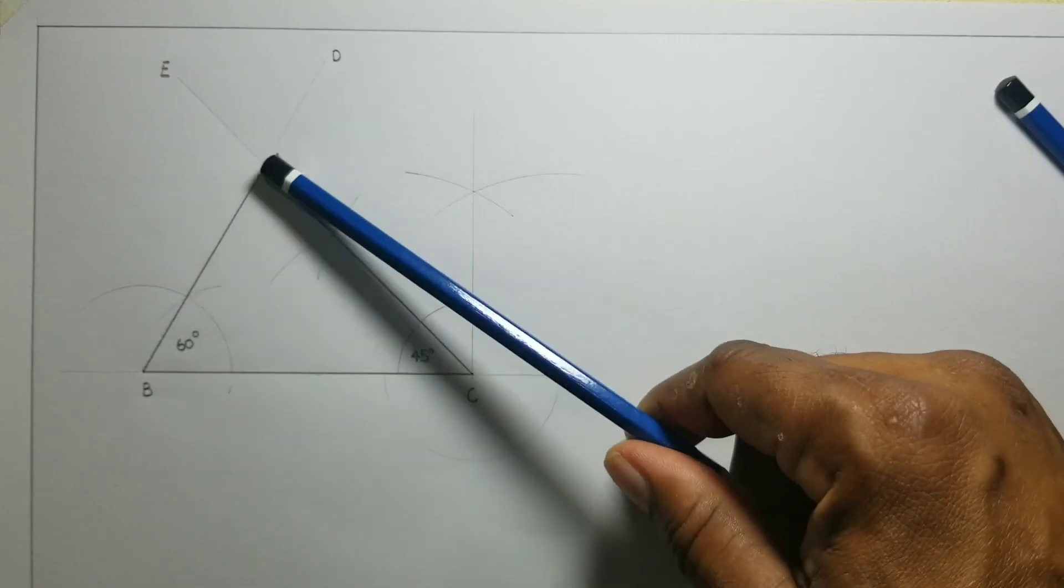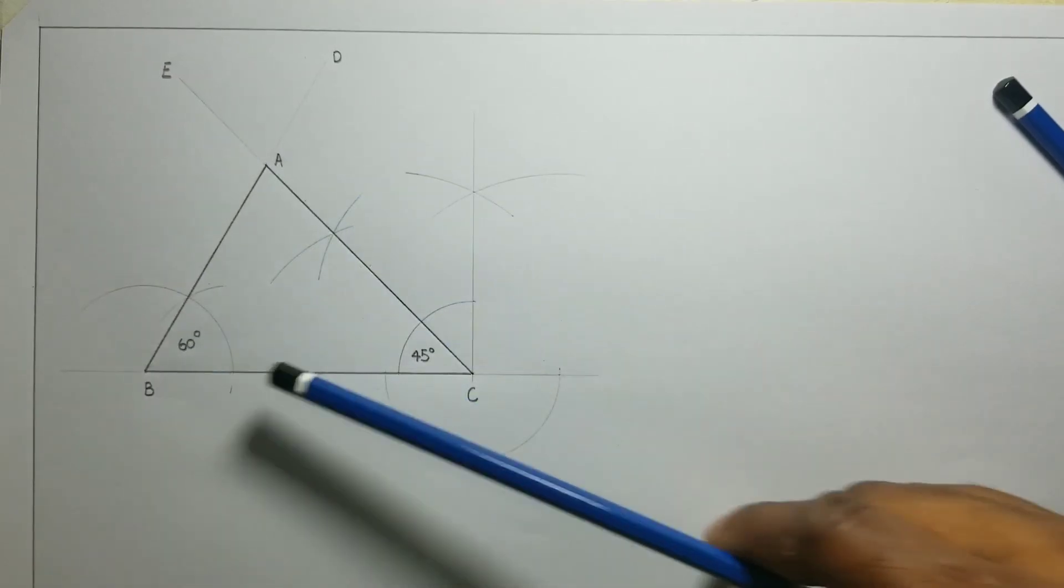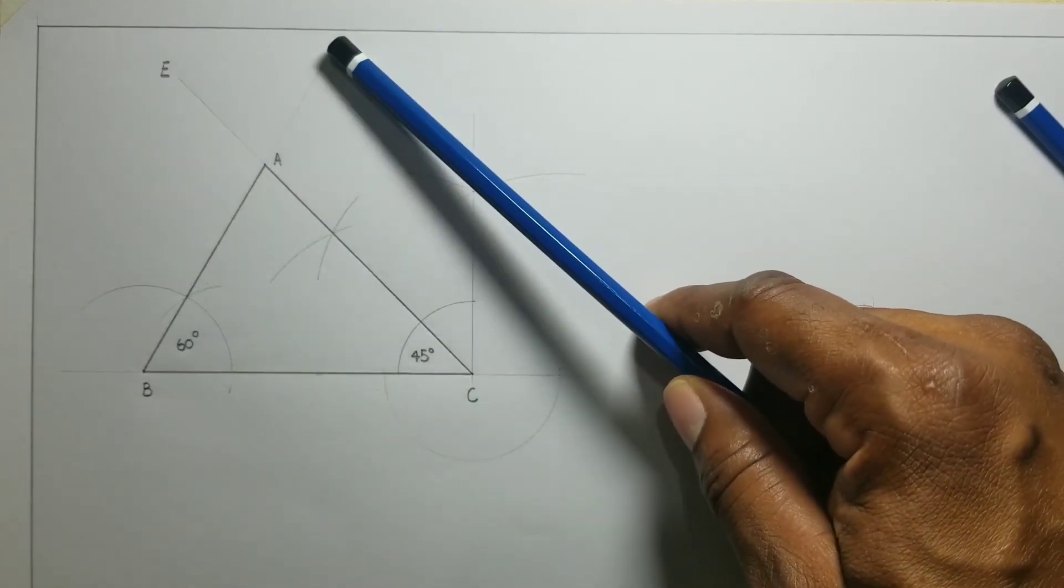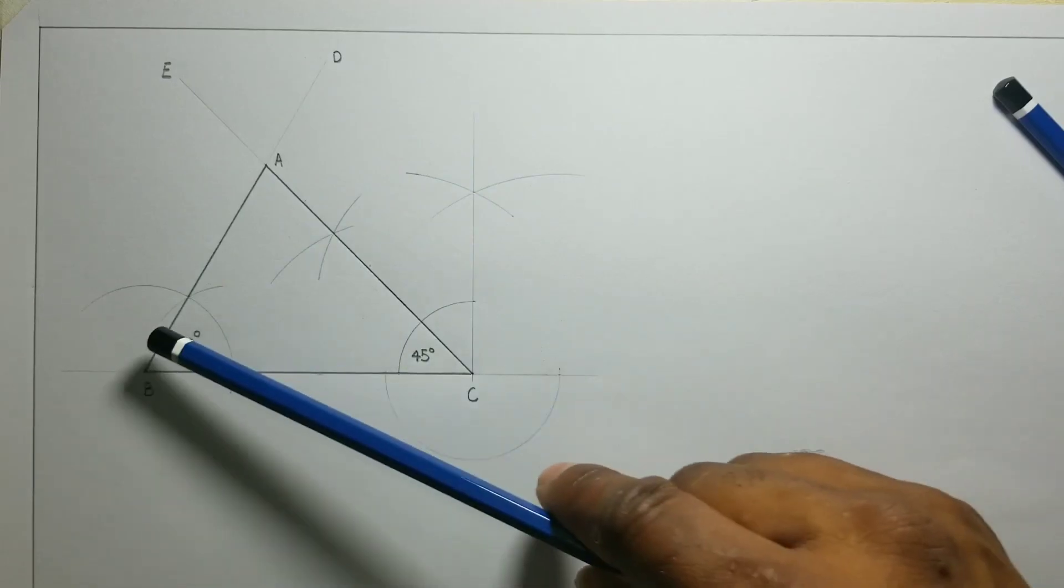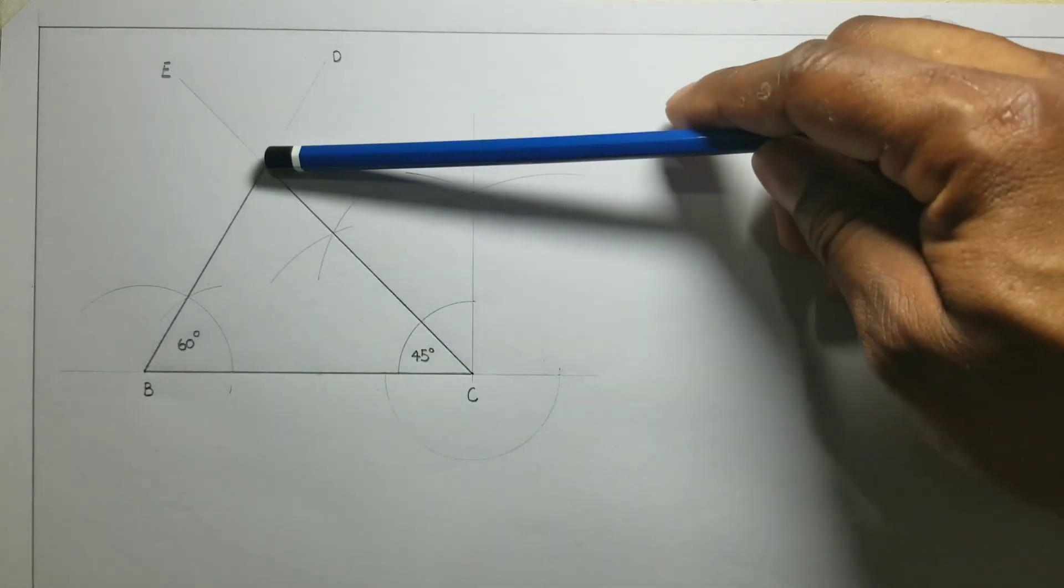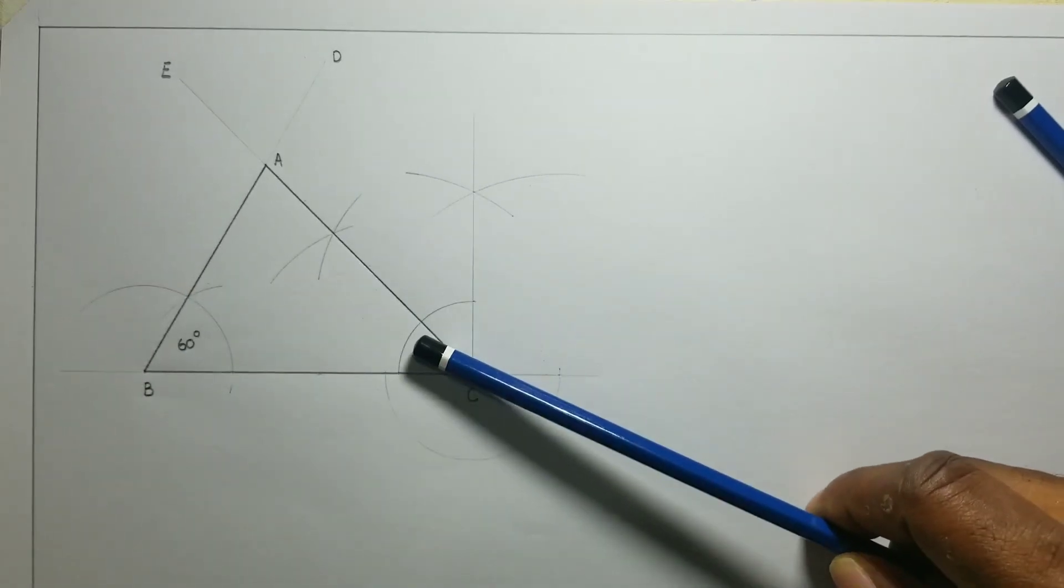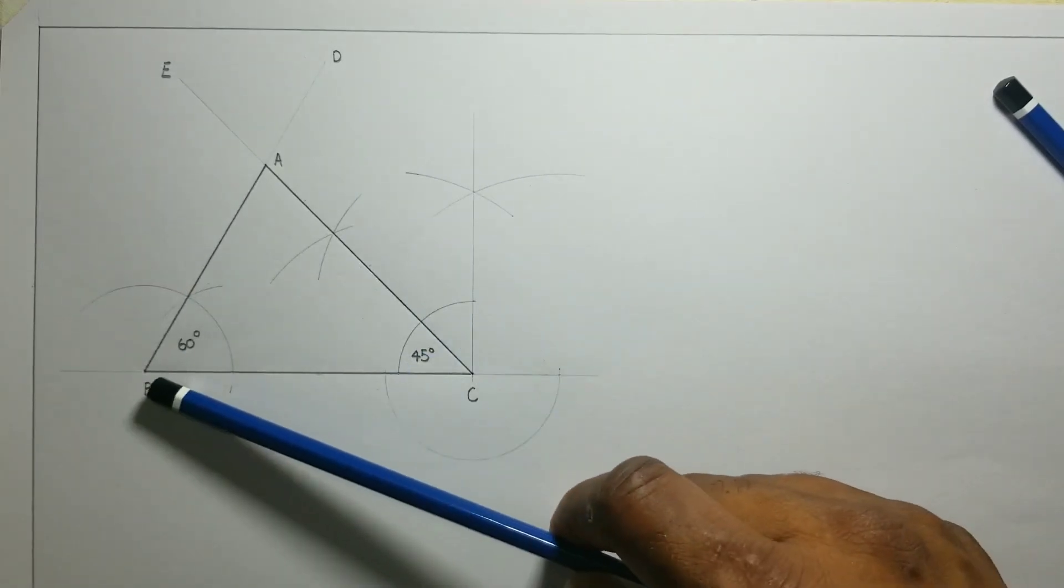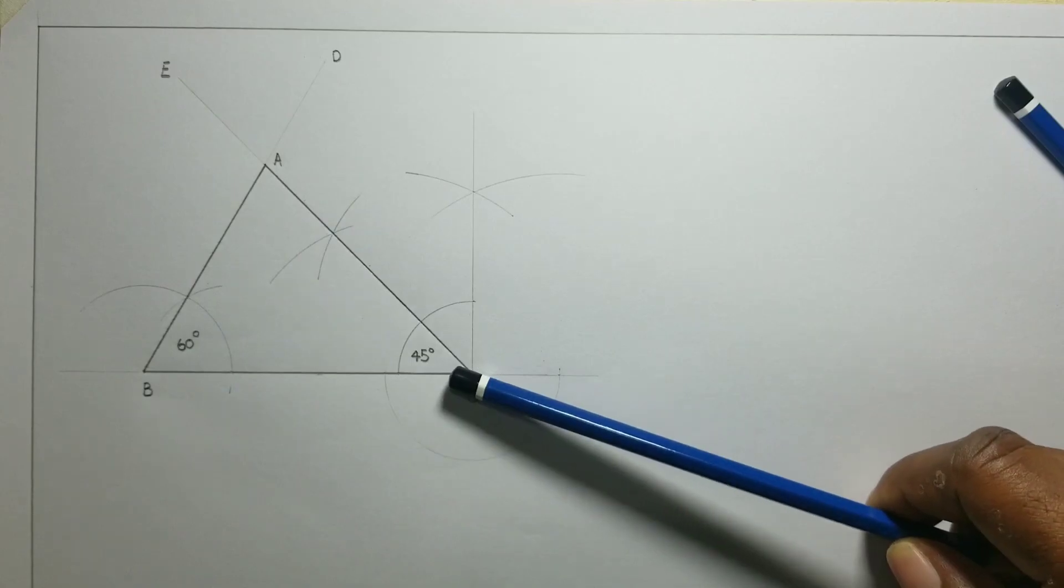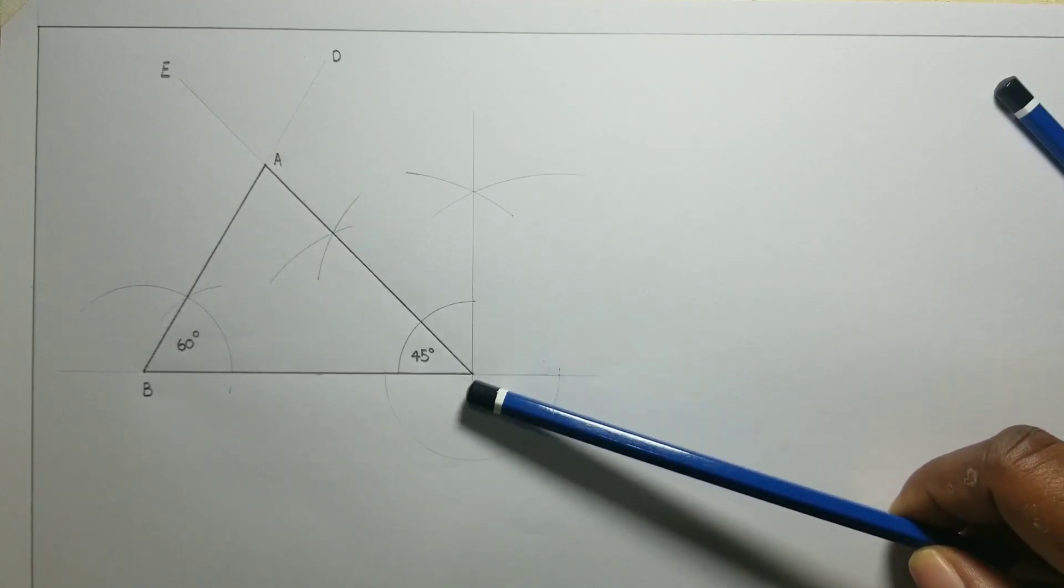So angle ABC or we could use DBC is 60 degrees and angle ACB is 45 degrees. The base of our triangle BC is 95 millimeters.